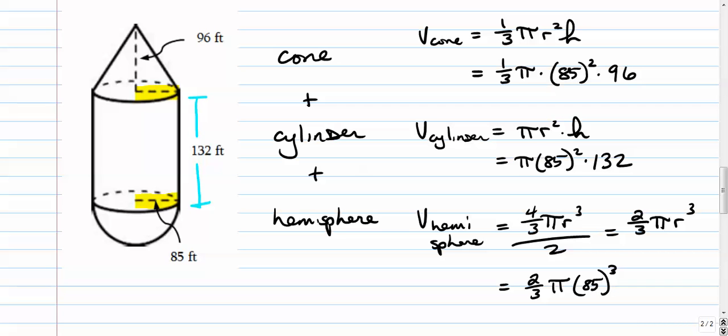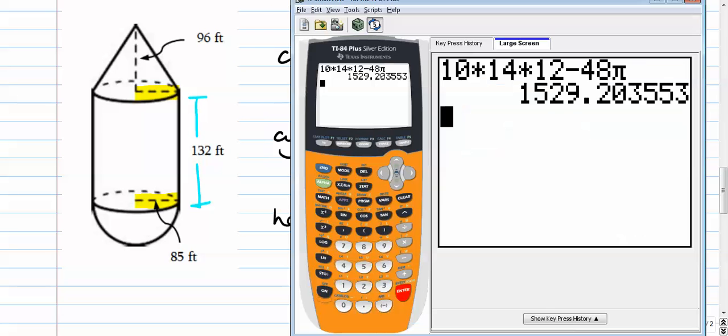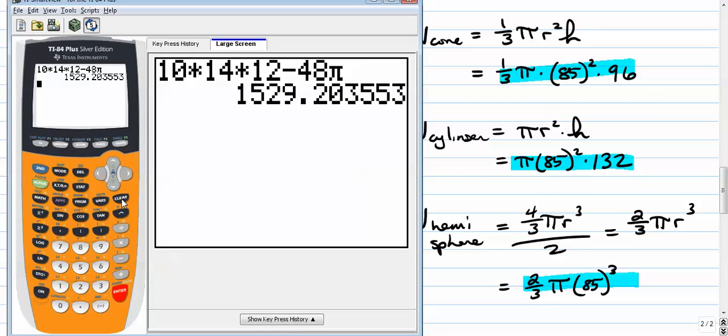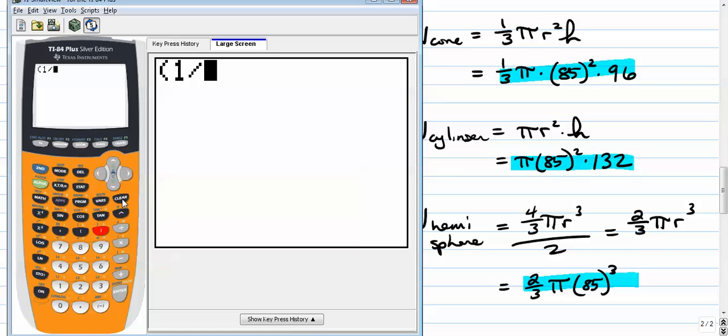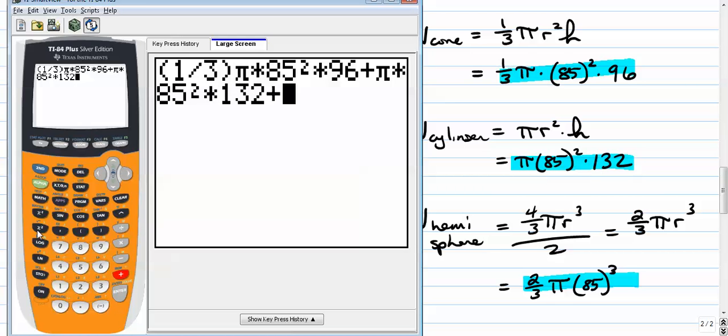Alright, so here's what we're going to do. We're going to take this plus this plus this, and I'm going to put it into my calculator all at the same time to make things very easy for myself. Here we go, big calculation coming: one third times pi times 85 squared times 96 plus pi times 85 squared times 132 plus two thirds pi times 85 to the third power. We're going to go to our math menu, go down to the third option, press enter.